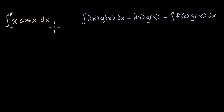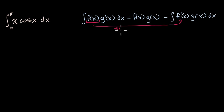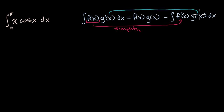To reiterate: you want to find an f of x that when you take its derivative, it simplifies things, and you want to find a g prime of x that when you take its anti-derivative, it doesn't get more complicated. Because if f of x gets simplified when you take its derivative, and g prime of x does not get more complicated when you take its anti-derivative, then this expression will maybe be easier to find the anti-derivative of.